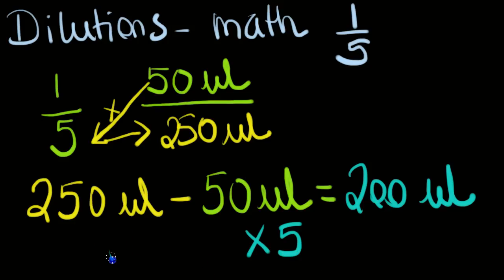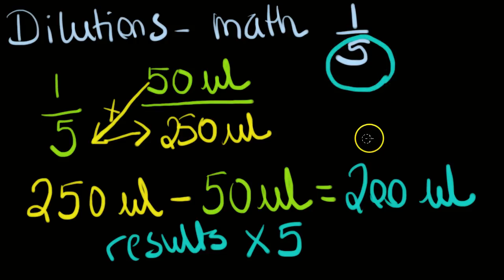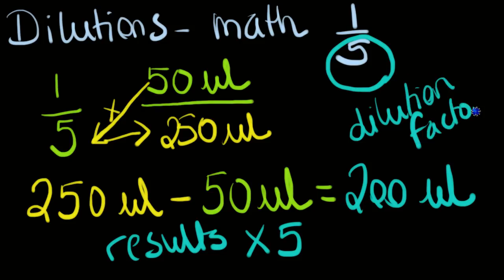Which is your dilution factor. So we'll put results here multiplied by 5, which is your dilution factor. The bottom number here is always your dilution factor, and there you go.